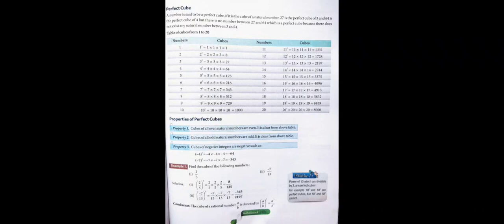Now let's look at the properties. Property 1: Cubes of all even natural numbers are even — this is clear from the above table, meaning all even natural numbers will have even cubes. Property 2: Cubes of all odd natural numbers are odd — all odd natural numbers will have odd cubes.